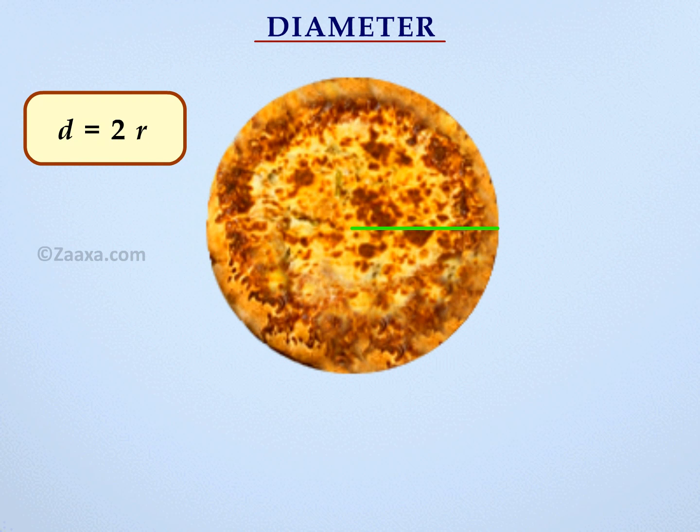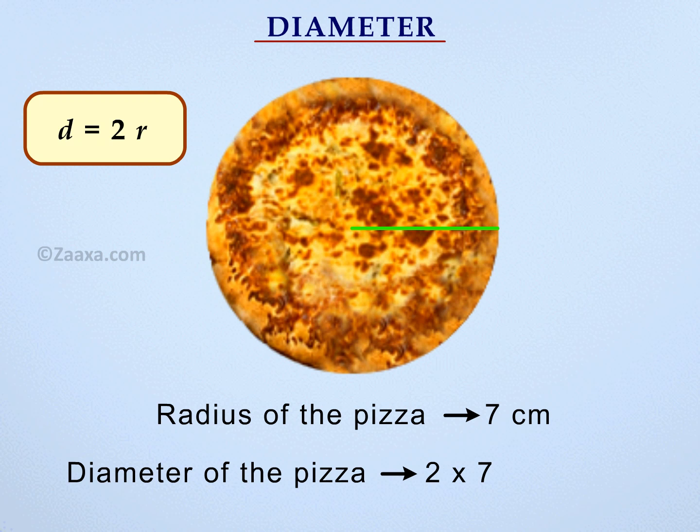Let us now find the diameter of a pizza which has a radius of 7 cm. We already learned that the diameter is twice the radius. Therefore, the diameter of the pizza is 14 cm.